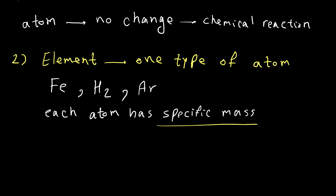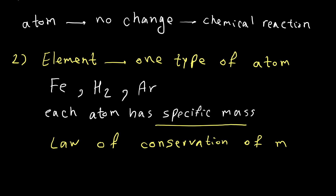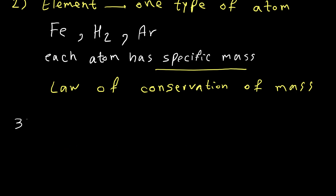Today we need to revise this one — we know elements may have different types of atoms that we call isotopes. I explain isotopes in another video. Also, because it talks about the specific mass of the atom, it can explain the law of conservation of mass in chemical reactions.